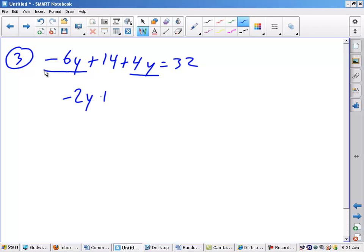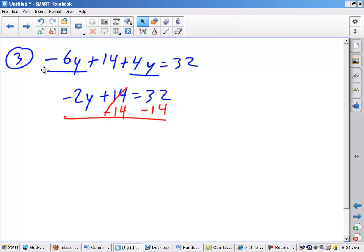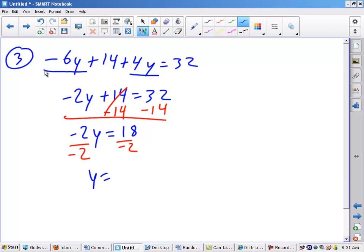That gives me negative 2y. Be careful. Think about it. Use your calculator. Plus 14 equals 32. I then have a two-step equation. So I need to subtract 14 because I do the addition-subtraction step first. And then I have negative 2y equals 32 minus 14 will then give me 18. Double check me. I then divide by negative 2 because it's the opposite operation. And I get y is equal to negative 9.